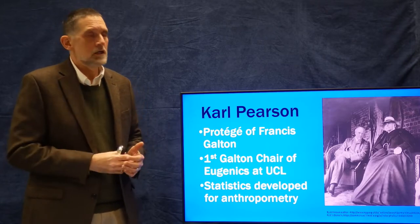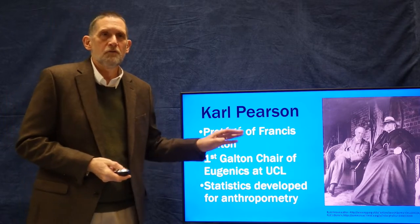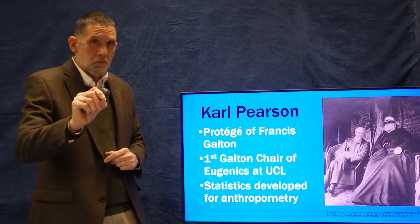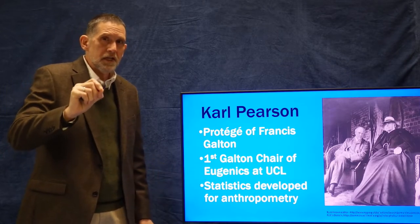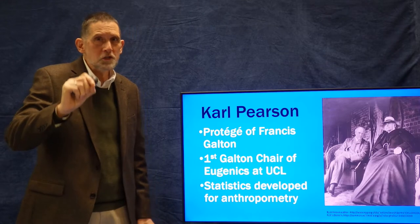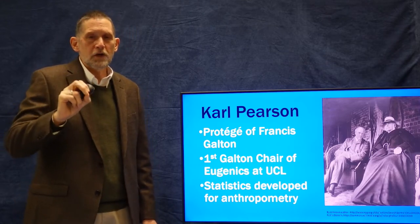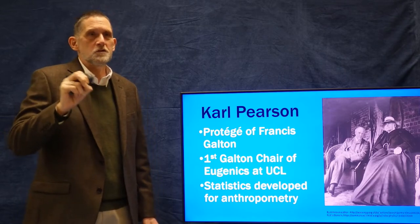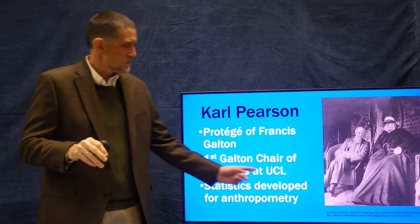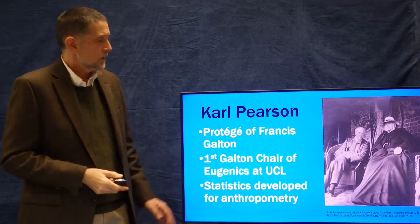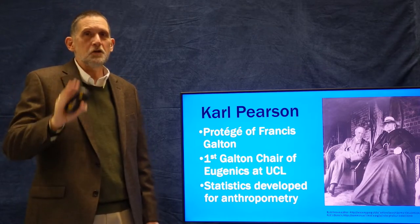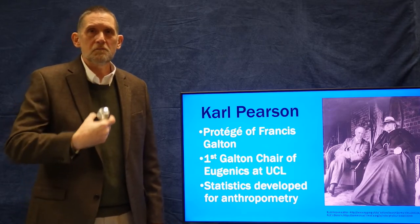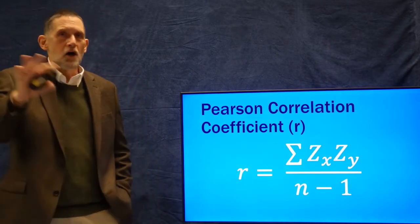It's also worth noting that eugenics is returning today in the form of CRISPR — the ability to carefully modify genetic material and build children with desirable traits. That's basically eugenics. It hasn't gone away; it's coming back in a new form. It's a good thing the biomedical community is very concerned about this, and we as anthropologists and as people should think carefully about it.